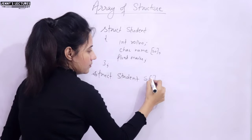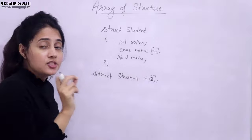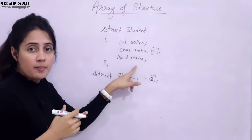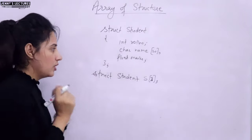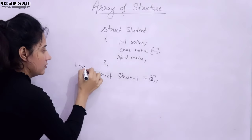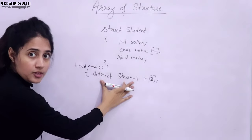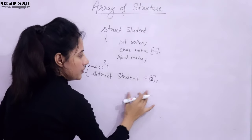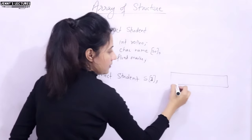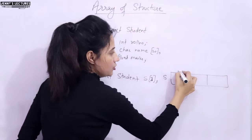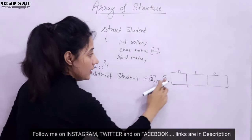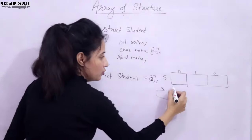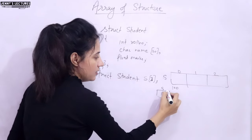For understanding purposes, I'm taking three students, so size is 3. Now, how memory would be allocated — the memory representation — and how you can access and initialize these structure members is very important. Here we have an array named 's', with indices 0, 1, and 2. The name of the array 's' contains the base address of the array — suppose the base address is 100 — so it points to the first element.